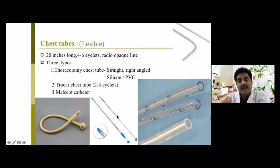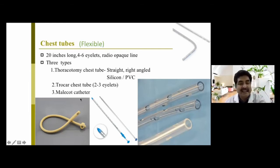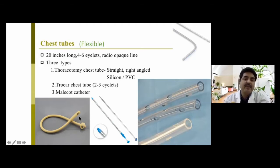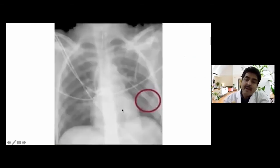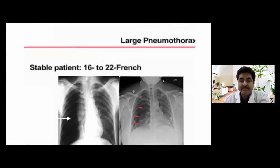The trocar chest tube has a trocar and cannula system, similar to laparoscopic ports. In earlier days, a Malecot catheter — a self-retaining catheter — was used, but it is no longer required routinely. One critical point: the last eyelet of the tube must be inside the pleural cavity. If it is outside, it may cause leakage or infection.